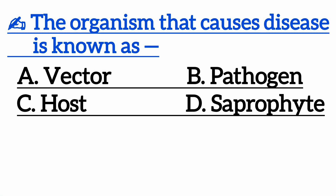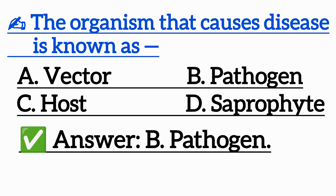Question 7: The organism that causes disease is known as — Option A: Vector, Option B: Pathogen, Option C: Host, Option D: Saprophyte. Correct answer is Option B: Pathogen.